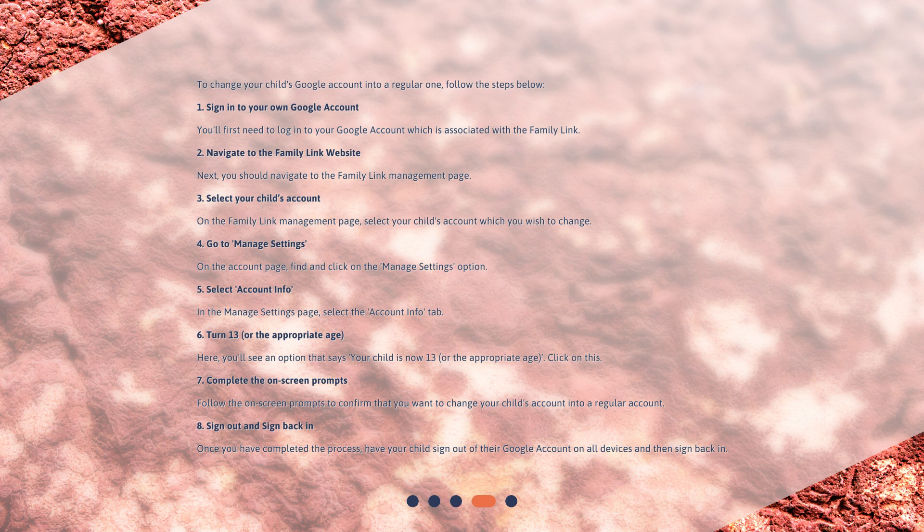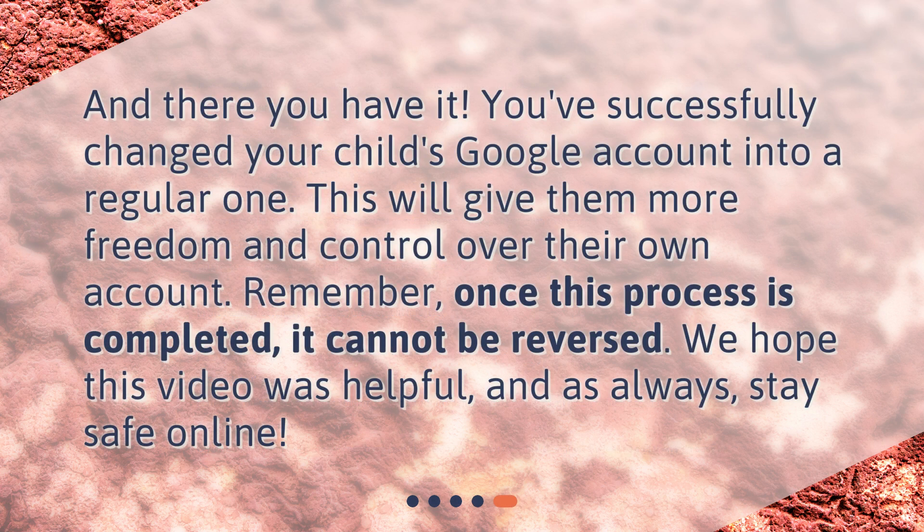Step 7: Complete the on-screen prompts. Follow the on-screen prompts to confirm that you want to change your child's account into a regular account. Step 8: Sign out and sign back in. Once you have completed the process, have your child sign out of their Google account on all devices and then sign back in. And there you have it — you've successfully changed your child's Google account into a regular one.